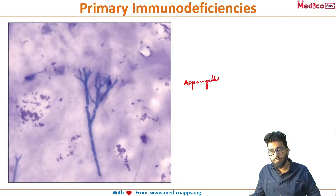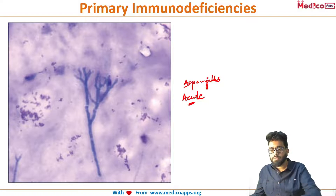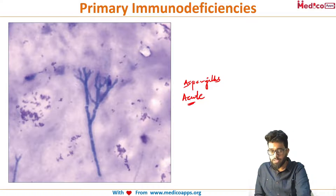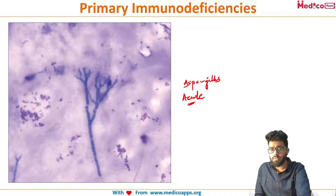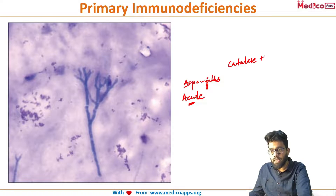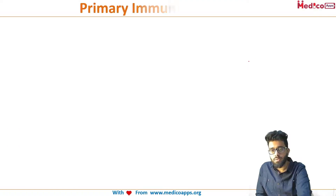A good way to remember: A for acute angle, A for Aspergillus. When you have an obtuse angle, you have other organisms like Mucor. But whenever you see an acute angle, that is Aspergillus. Aspergillus is a catalase-positive organism, so repeated Aspergillus pneumonia infections occur in CGD, along with Staph and others.